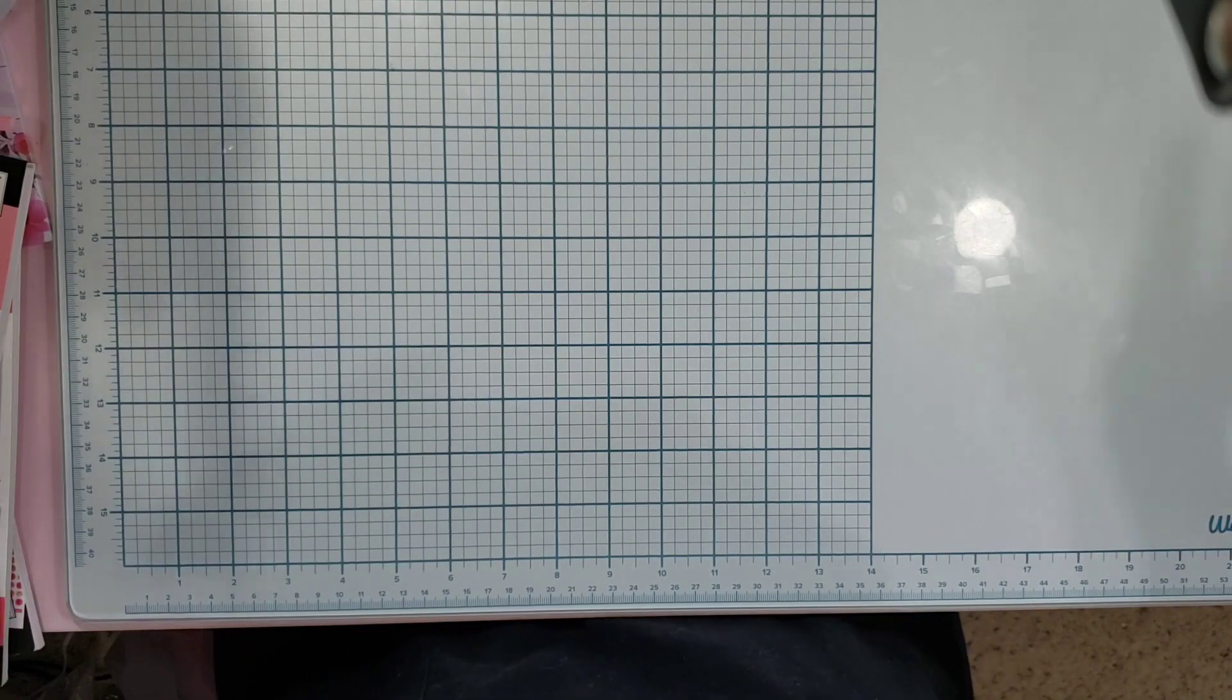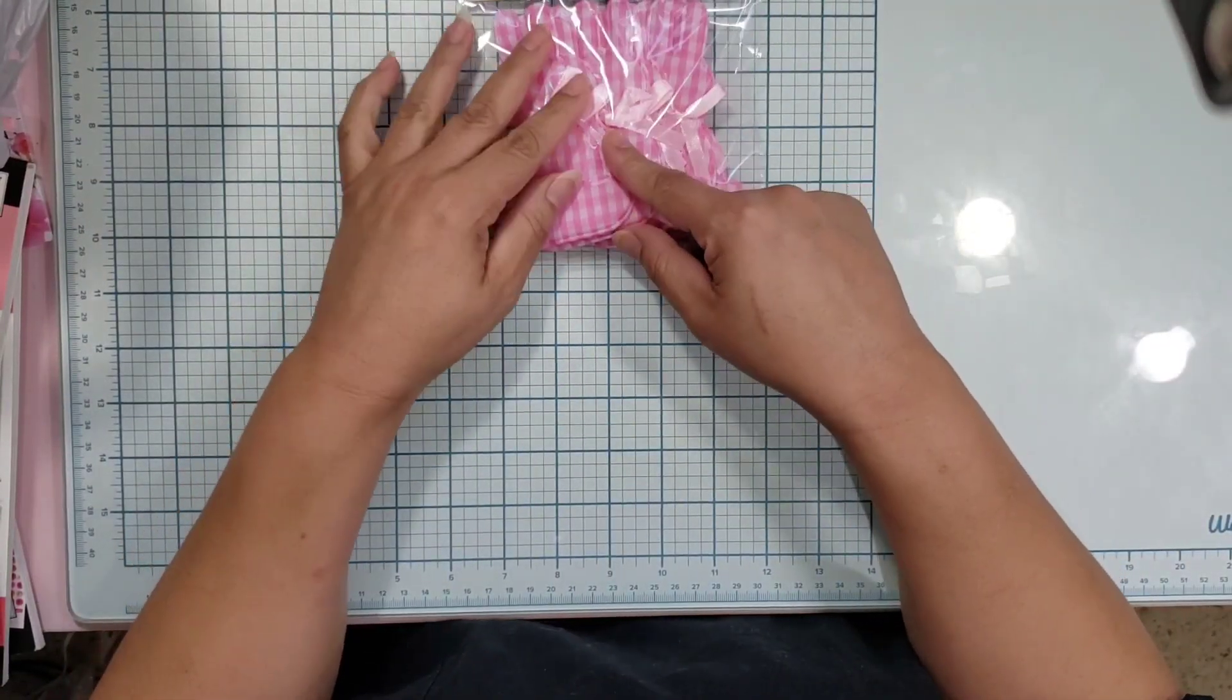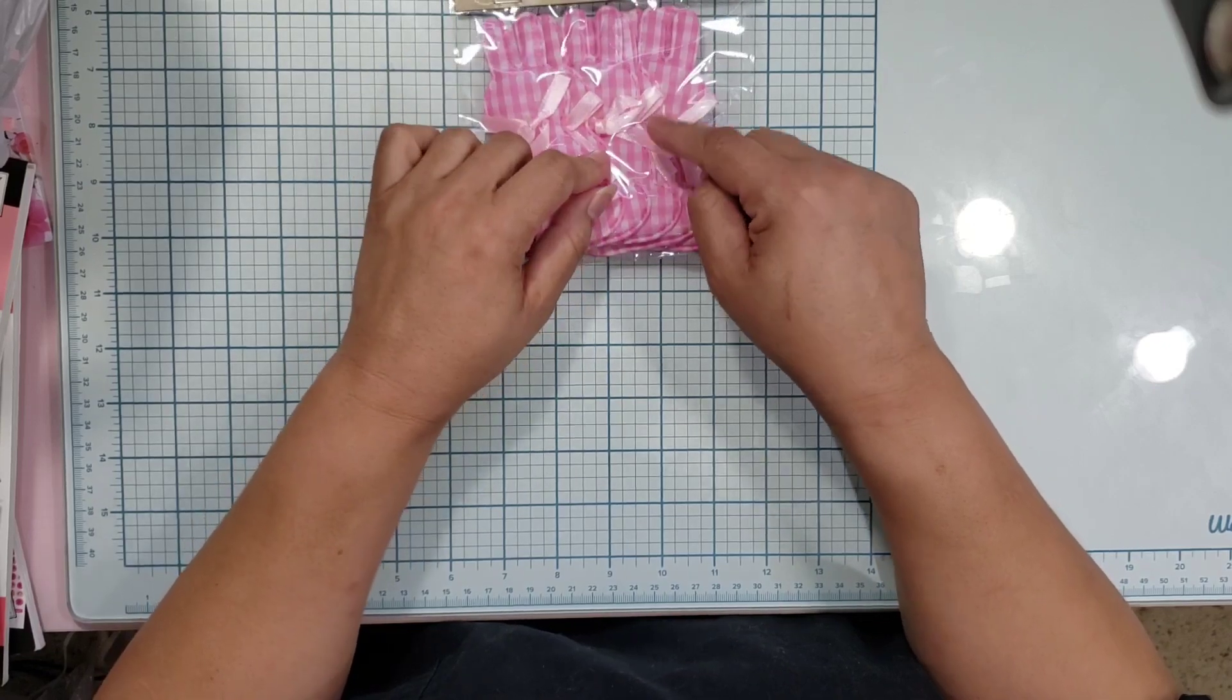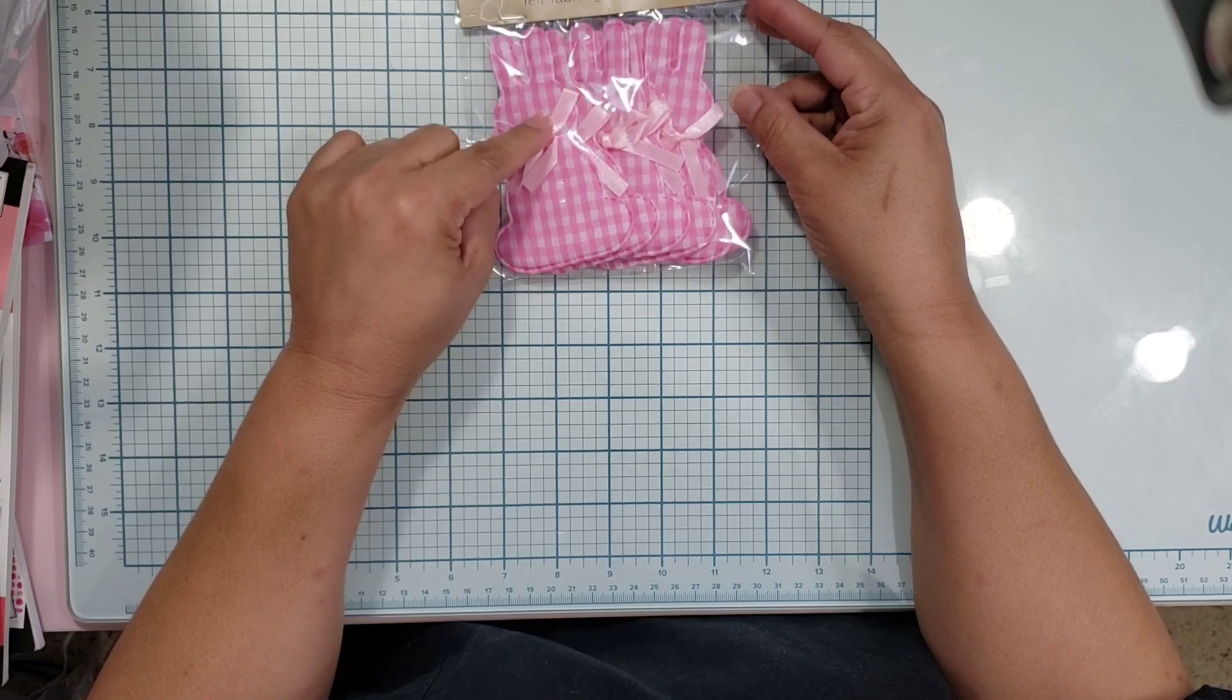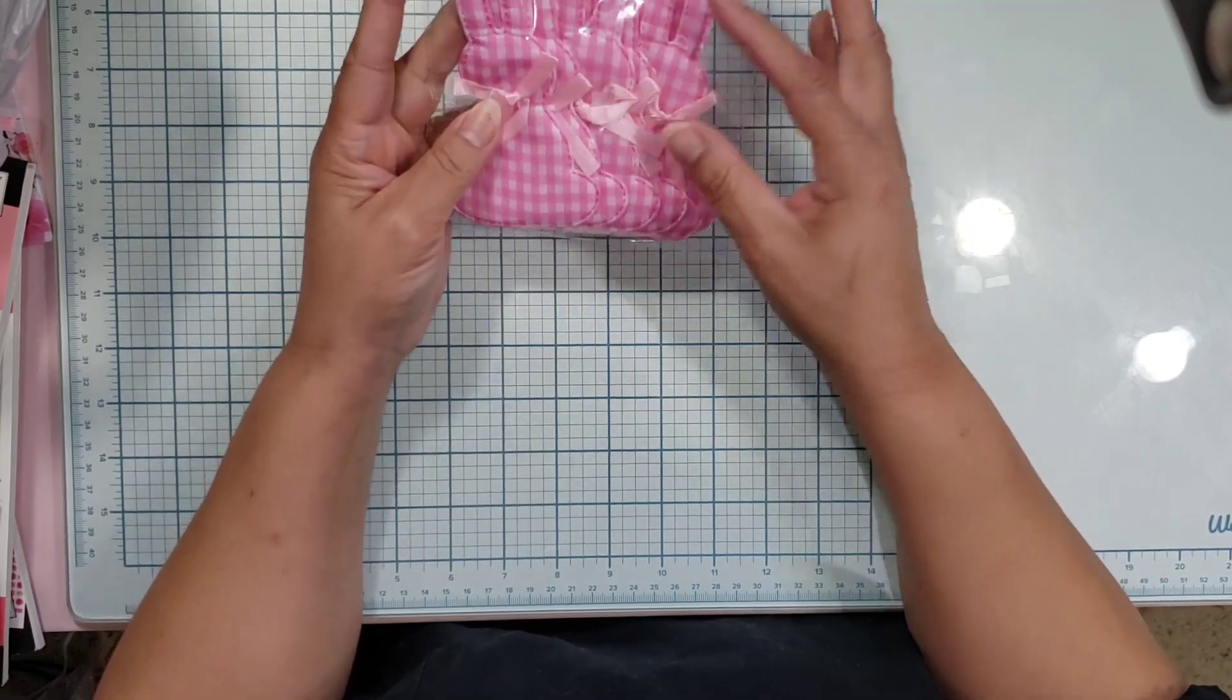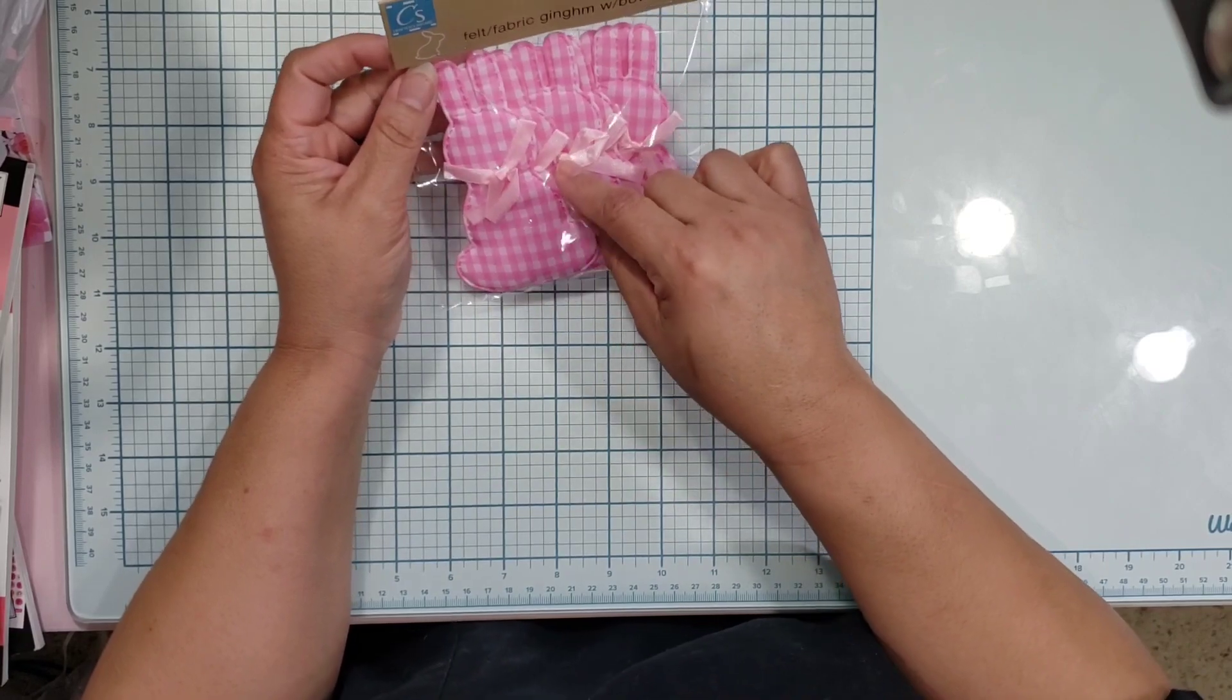These are new to me. I remember them having the chicks before and maybe these in blue, but this is the pink ones I found. My particular Dollar Tree also had yellow ones and blue bunnies.